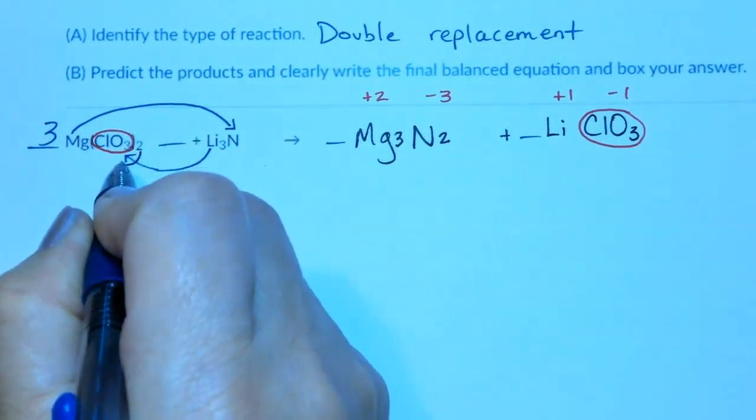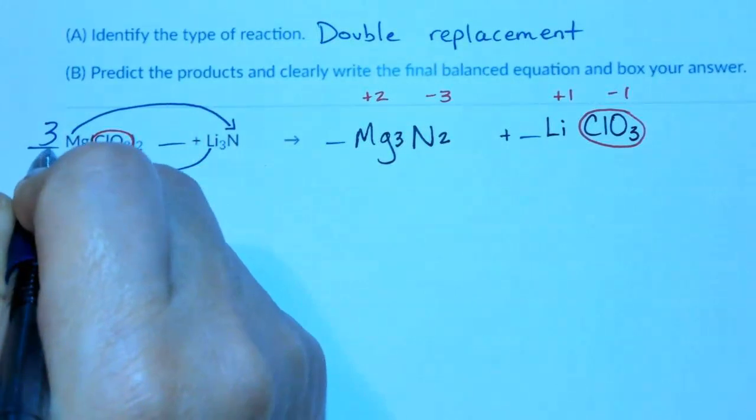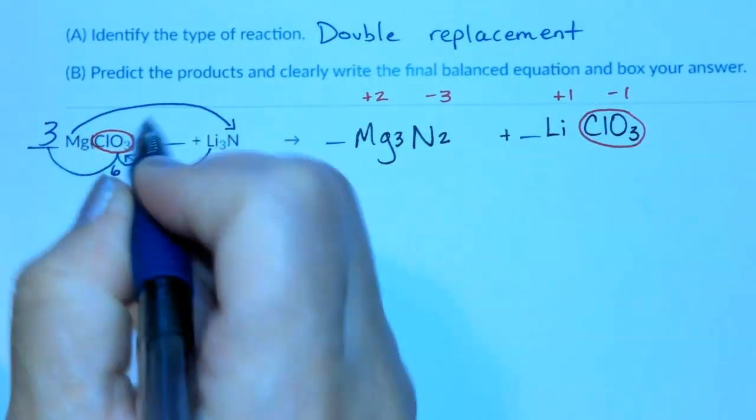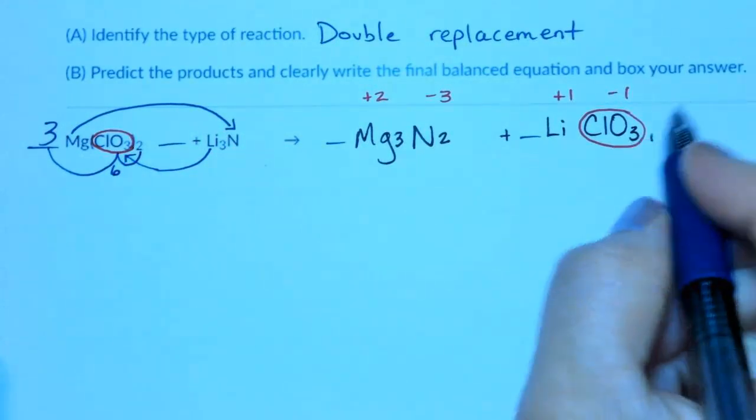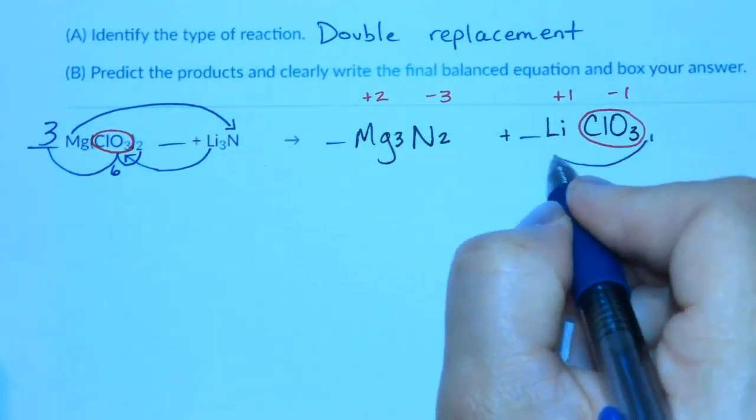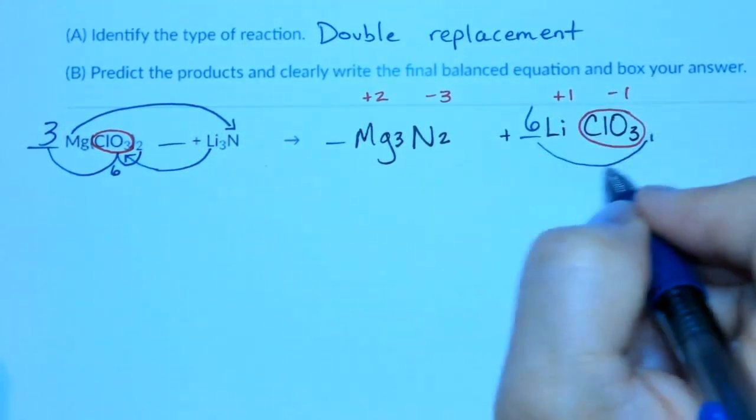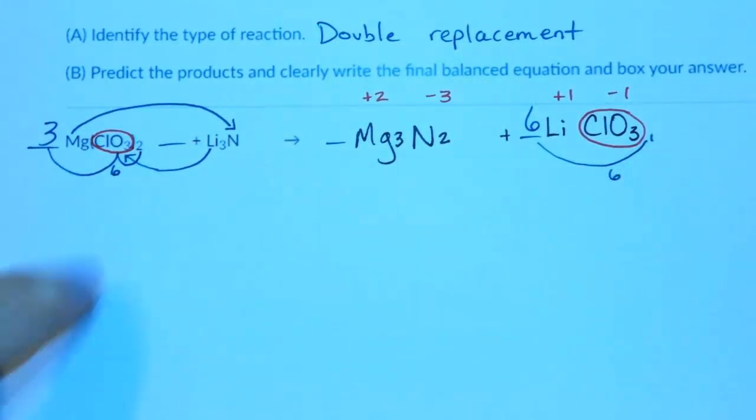we have 2 times 3 is a total of 6 chlorates. And on the right, I only have 1 chlorate. So 1 times 6 is going to give me 6 chlorates on the right to balance with the 6 I have on the left.